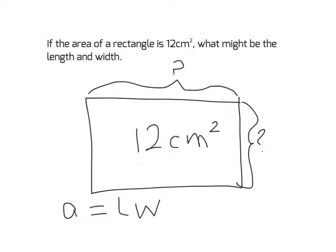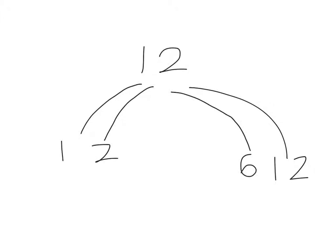So I'm going to find the factor pairs of the number 12. This means that I'll be able to find pairs of numbers that multiply together to give me the area, the 12cm squared. And I'm going to do it systematically. I've got 1 and 12, 2 and 6, 3 and 4.